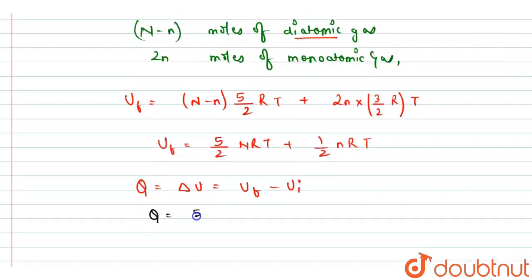So now the heat supplied will be given as ΔU, which equals Uf minus Ui. So putting the values of Uf and Ui, we will get this as Uf is 5/2 NRT plus 1/2 nRT minus initial is 5/2 NRT. From here we can cancel out this term.